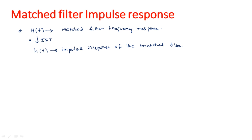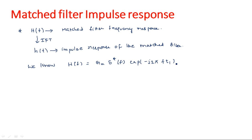We need to convert H(F) to H(T) by applying the inverse Fourier transform, and after conversion we need to see what the relation is between the received signal and the impulse response of the matched filter. We know the matched filter frequency response H(F) can be expressed as G_A · S*(F) · exp(-j2πFT₁), where S*(F) is the complex conjugate of S(F) — the received signal frequency response — G_A is a constant, and T₁ is the time at which the signal has maximum amplitude.